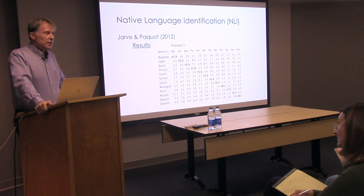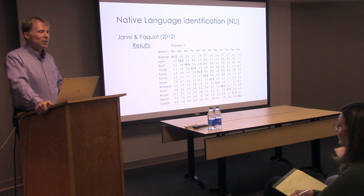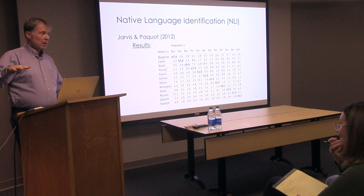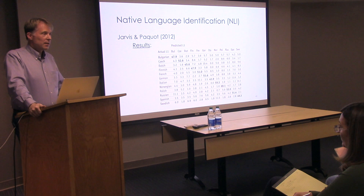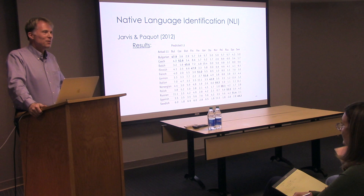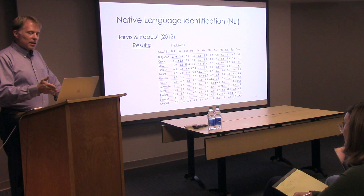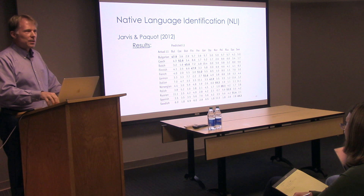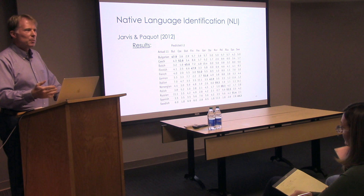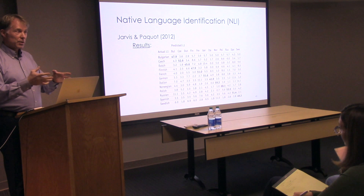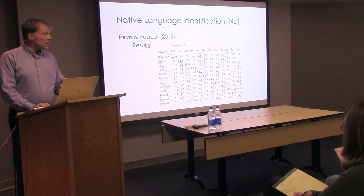I also conducted another study with one of Paquot's colleagues at her university in Belgium, involving over 400,000 features — not just a few hundred — with a corpus of 11 different L1 groups. Our classification accuracy in that case was 84%, which is quite remarkable. What I find really interesting is that even though individuals don't always follow group tendencies in terms of means, they're still highly group-specific — their behavior can be so group-specific that you can identify with 84% accuracy what their native language background is, even when they're relatively proficient.